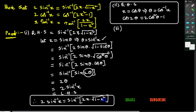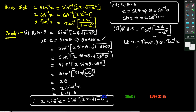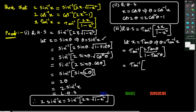Now I'll prove the third result by taking RHS equal to LHS. RHS is tan⁻¹(2x/(1−x²)). I prove this by letting x = tan θ. If x = tan θ, then θ = tan⁻¹x. Substituting x = tan θ in RHS, wherever x appears I write tan θ, giving tan⁻¹(2 tan θ/(1−tan²θ)). From trigonometry, tan 2θ = 2 tan θ/(1−tan²θ), so we write tan⁻¹(tan 2θ).